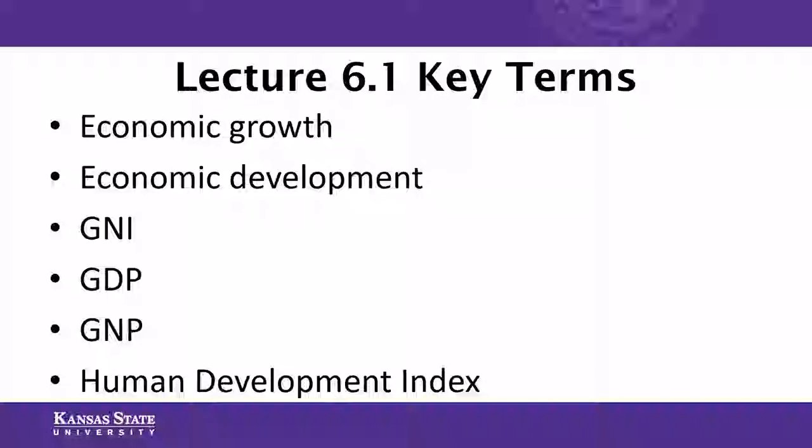The key terms — there are six of them: economic growth, economic development, GNI which stands for gross national income, GDP or gross domestic product, GNP or gross national product, and finally the human development index, also often abbreviated as the HDI.